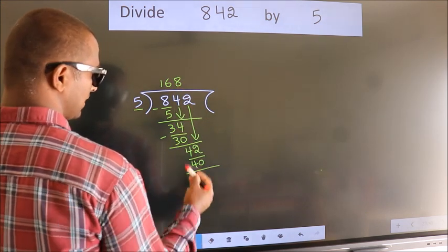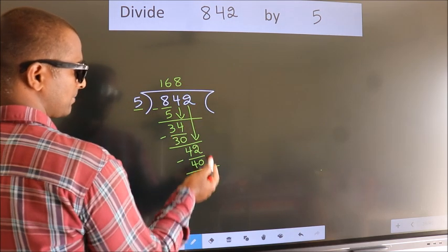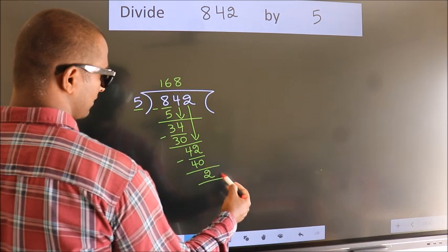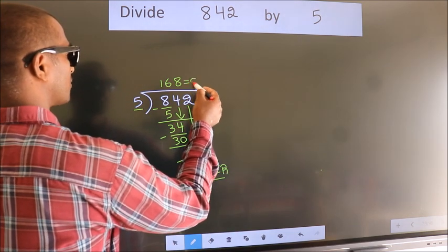Now we subtract, we get 2. No more numbers to bring down, so we stop here. This is our remainder. This is our quotient.